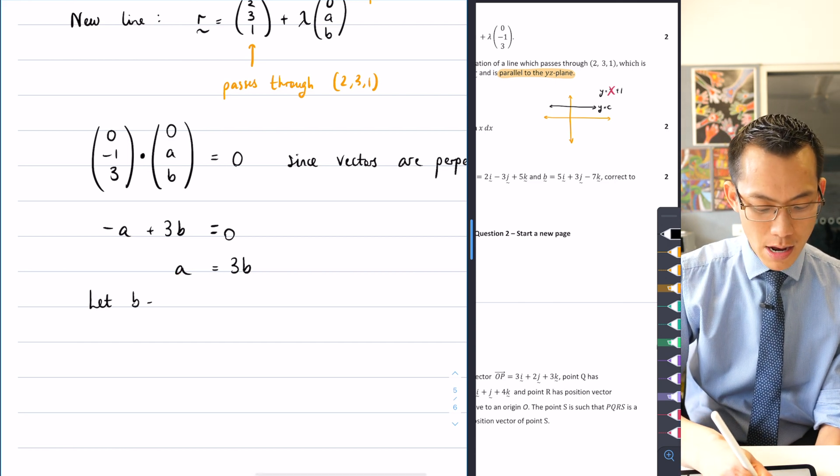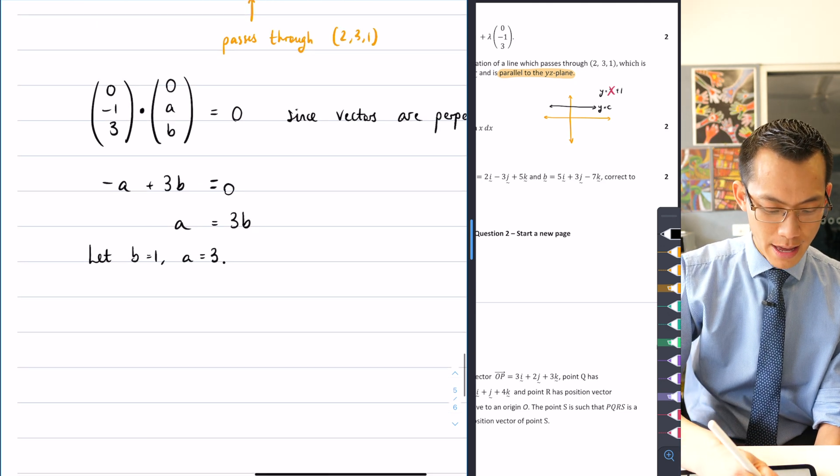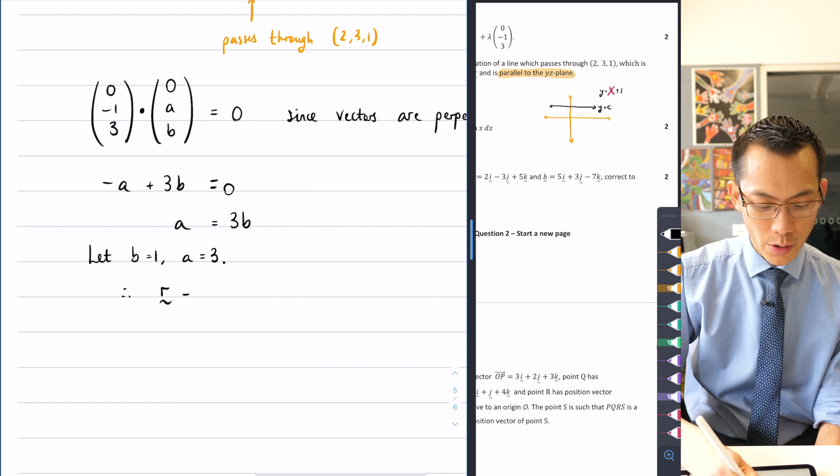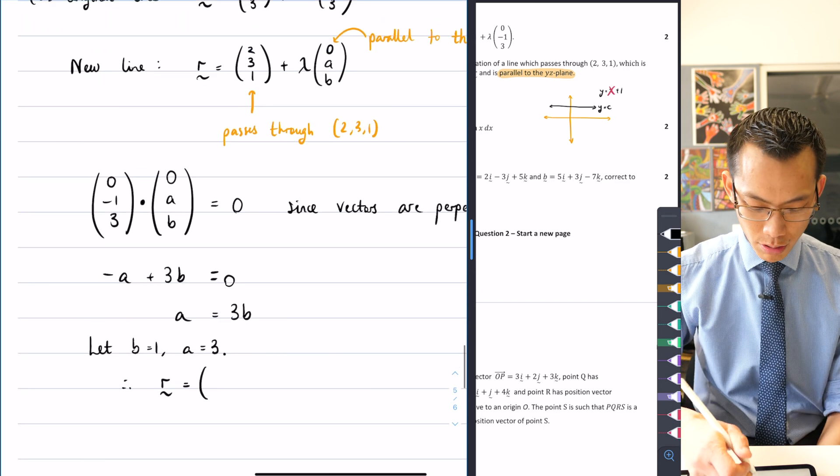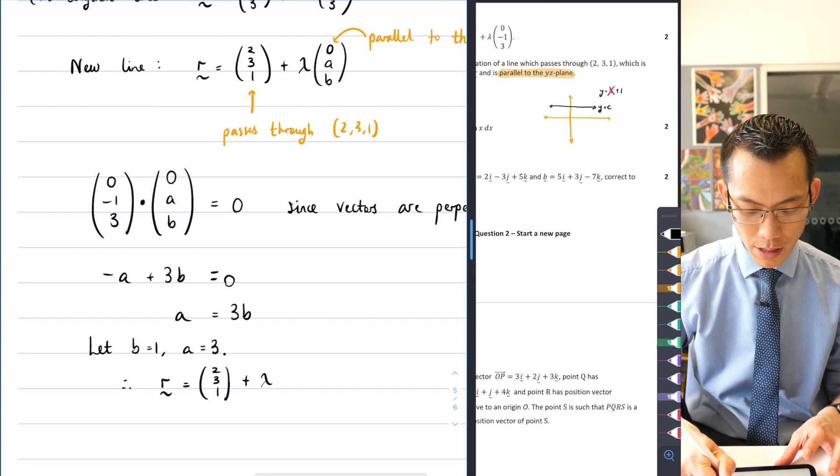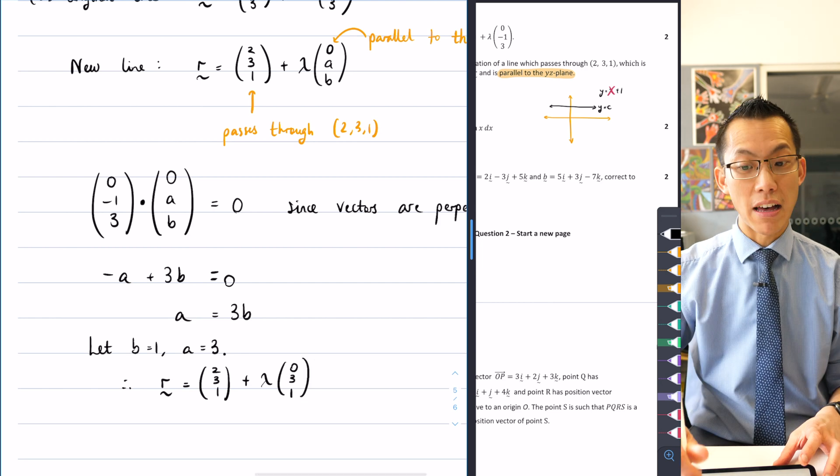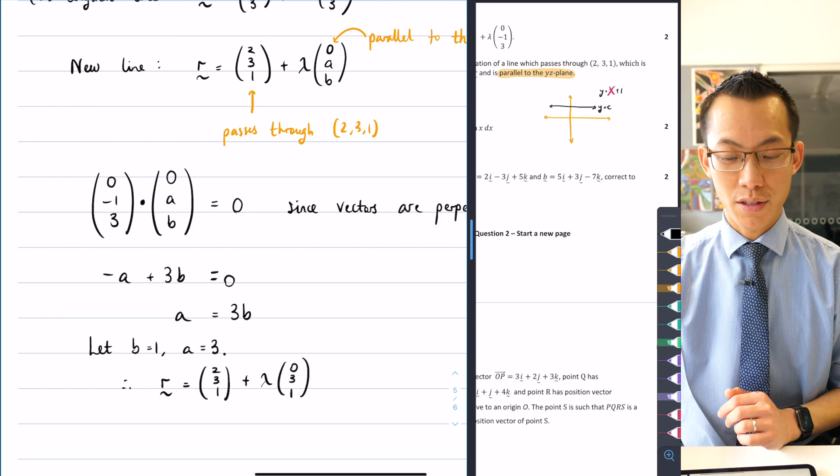So let B equal 1, that means A equals 3, and that should do it. I can say, therefore, my new line is going to be equal to, what was I on? 2, 3, 1. 2, 3, 1 plus lambda of 0, 3, 1. Like so. So that's all there is to it.